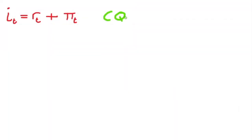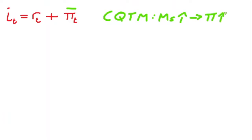This equation relates these three key variables together. Inflation, the figure on the right-hand side, is determined by the quantity theory of money, which we've seen in a previous video. When the money supply increases in the economy, this causes inflation to increase — so inflation is driven by the money supply.